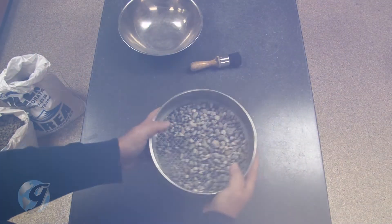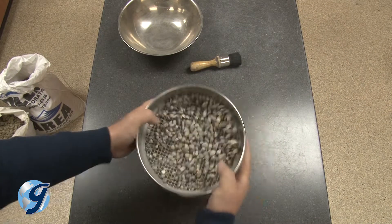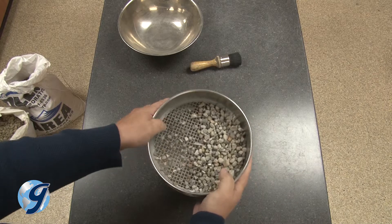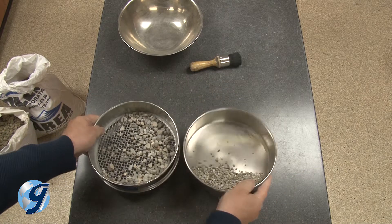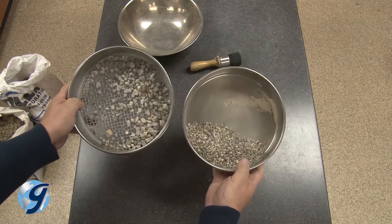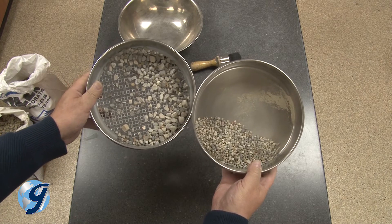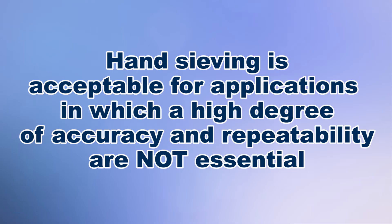The hand sieving method is a very basic test method for performing sieve analysis on aggregate. Results can be subjective and may vary when this method is performed by different operators. Hand sieving is acceptable for applications in which a high degree of accuracy and repeatability are not essential.